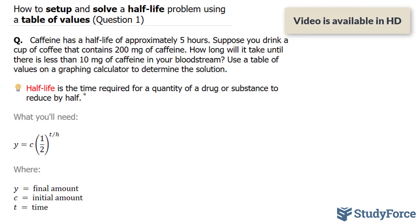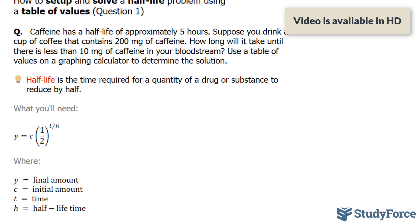Now, what you'll need to be successful in this question is knowledge of this formula. What this formula tells us is that y, which represents your final amount, is equal to c, which is the initial amount, times half, this fraction right here, to the power of t over h, where t represents the time and h represents the half-life.